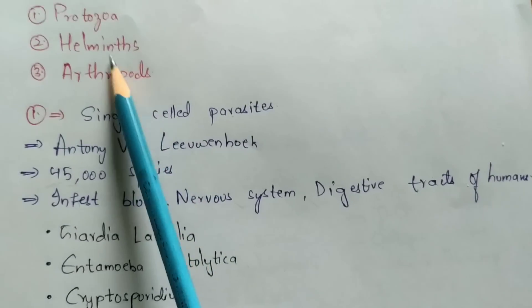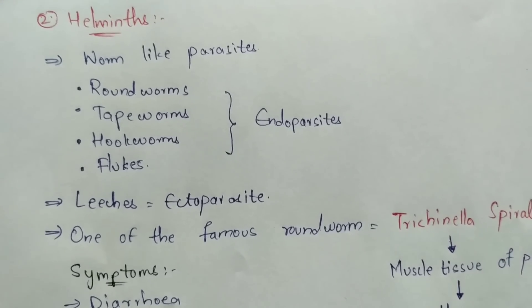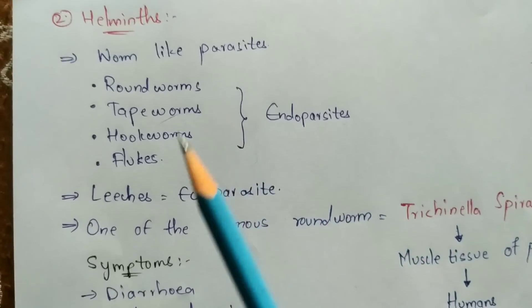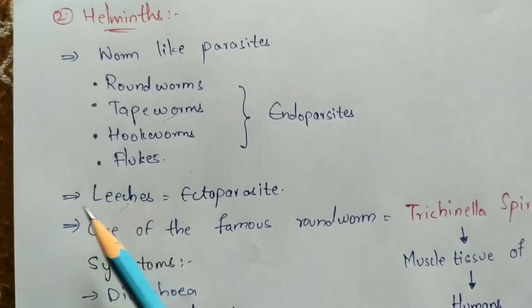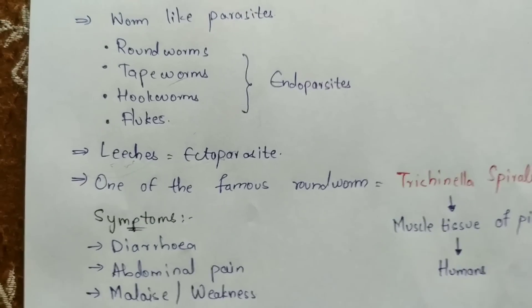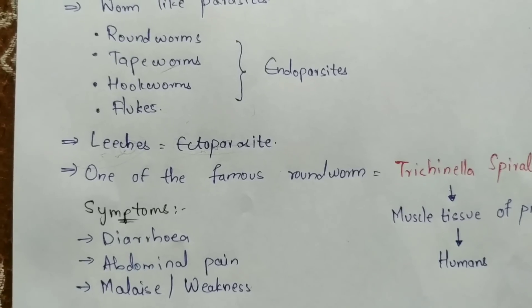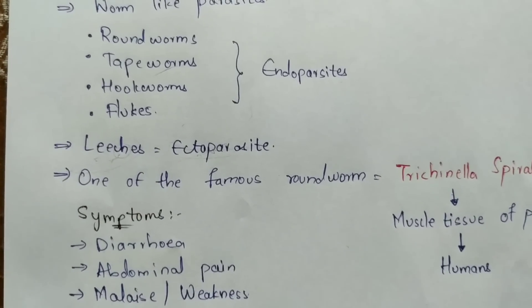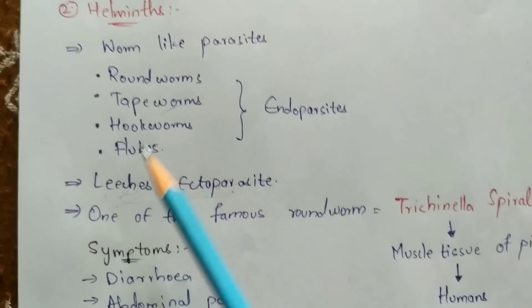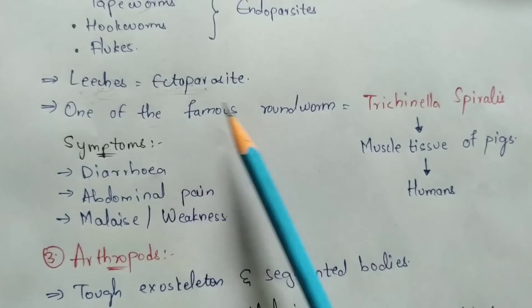Helminths are worm-like parasites. Different types of worms — roundworms, tapeworms, hookworms, and flukes — all fall under endoparasites. However, helminths also include leeches, which are ectoparasites, because leeches attack only the skin — either the epidermis or endodermis layer — but do not enter deep beneath the skin. Leeches are therefore a good example of an ectoparasite within the helminth classification.